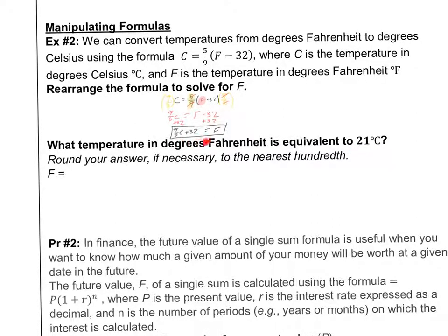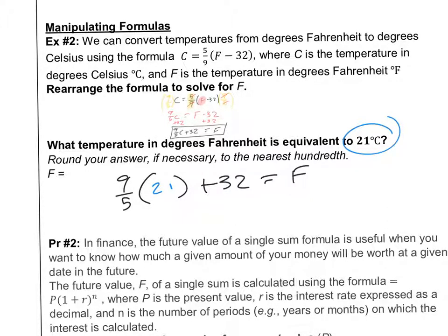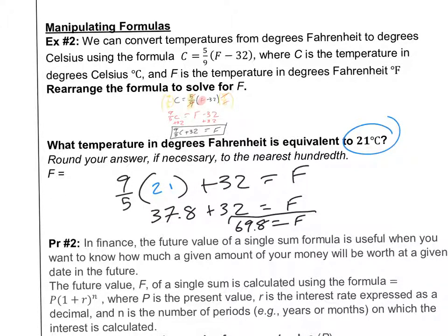The next part asks: what temperature in Fahrenheit is equivalent to 21 degrees Celsius? Now that we have F = (9/5)C + 32, we just plug in 21. Nine times 21 divided by 5 gives 37.8, and 37.8 plus 32 equals 69.8 degrees Fahrenheit. That's a pretty comfortable temperature — if you're in Cancun at 21°C, that's not bad at all.